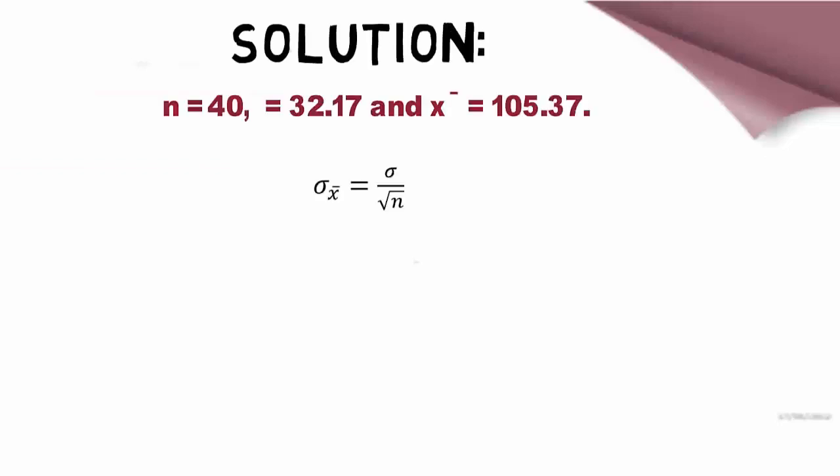The solution is: We know that sigma-x-bar equals sigma over square root of n. Now substitute the given values: sigma-x-bar equals 32.17 over square root of 40 equals 5.0865.